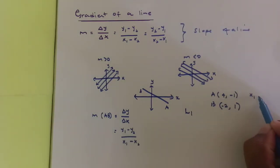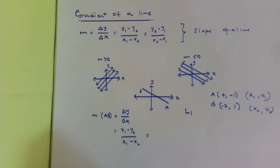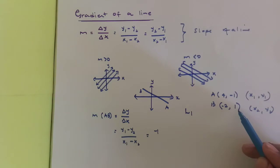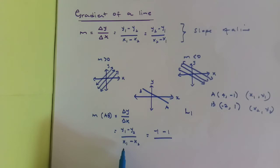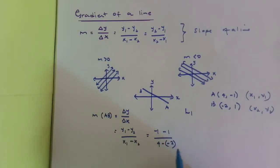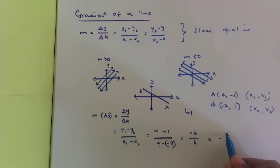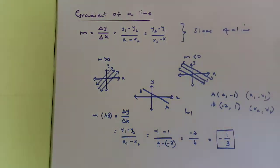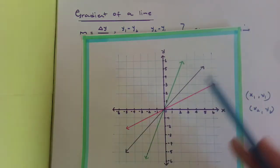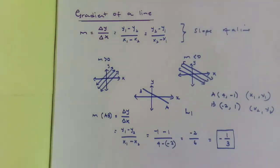Let's call A our (x1, y1) and B our (x2, y2). So y1 is -1, minus y2 which is 1, giving -1 minus 1. Divided by x1 which is 4, minus x2 which is -2, giving 4 minus (-2). This simplifies to -2 divided by 6, since a negative times a negative is positive: 4 plus 2 equals 6. Hence the gradient of line L1 is -1/3. We can see this line has a negative gradient, while those earlier lines all have a positive gradient.